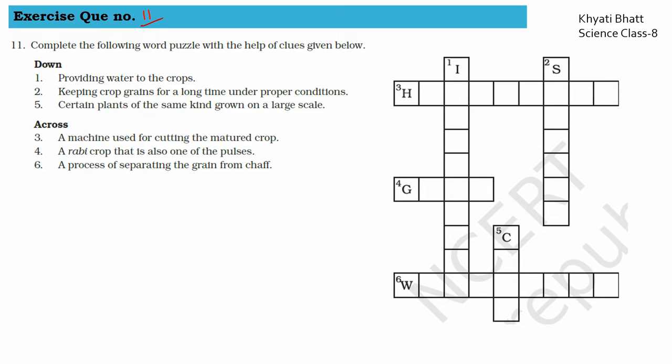Question number 11 from the exercise: Complete the following word puzzle with the help of the clues given below. Let us take down clues first. The first one is providing water to the crop. I has been given, so it is irrigation.